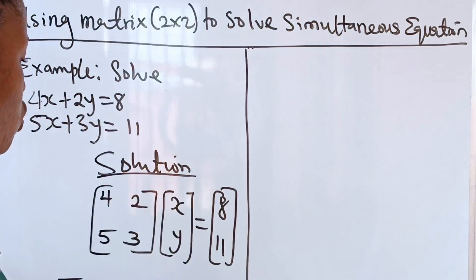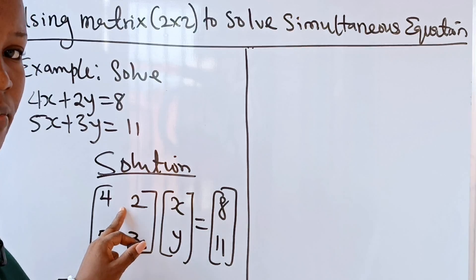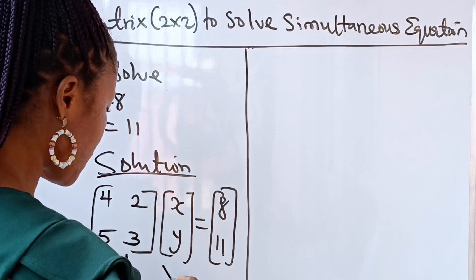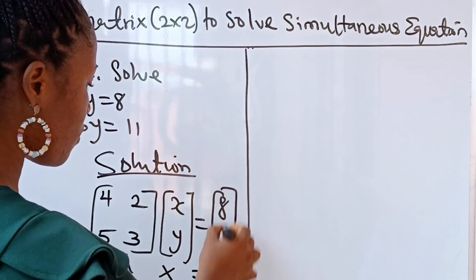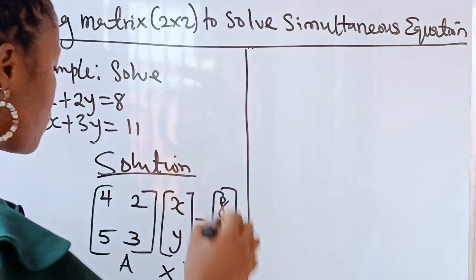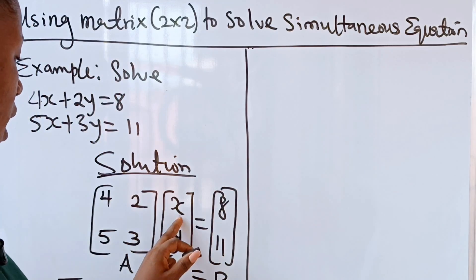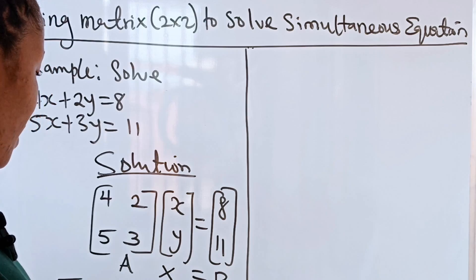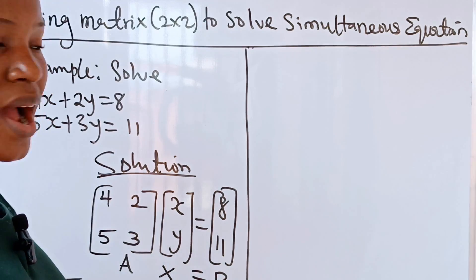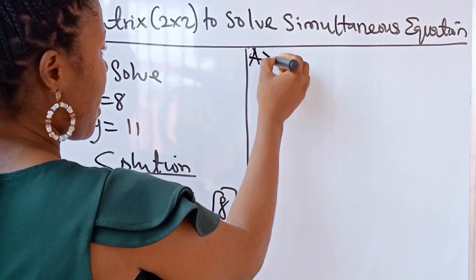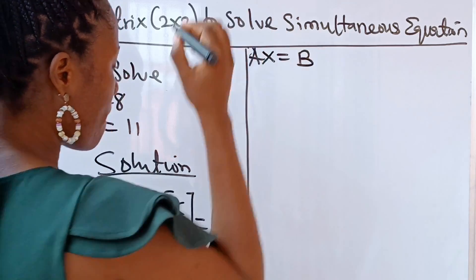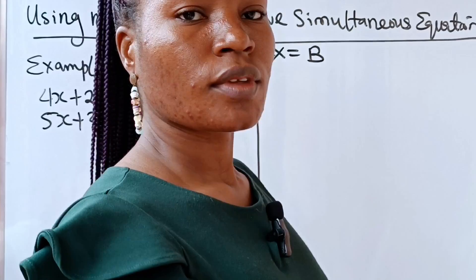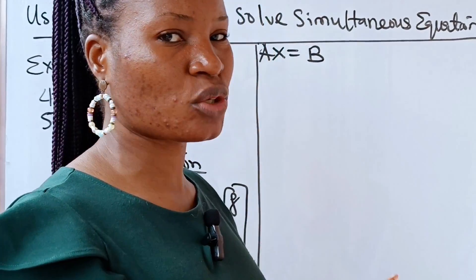Now we are going to name our matrix A, name our variable matrix X, and name our constants matrix B. So we can write that A times X equals B, giving us the equation AX = B. From here, we are going to solve for X.